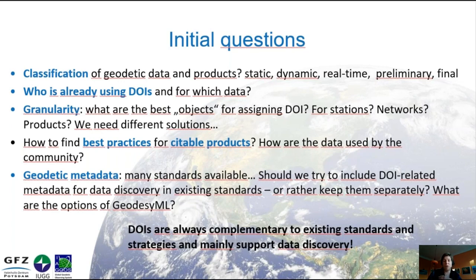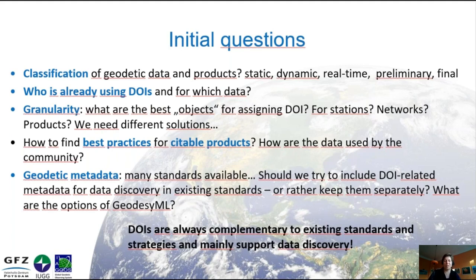Another question was how to find best practices for citable products. You need to consider how the data are used. If you assign DOIs to each individual data file, users who use a year of data would need to cite 365 DOIs in a paper, which is practically not possible. It must always reflect usage patterns to define a citable product — for example, using a network DOI or a product DOI.